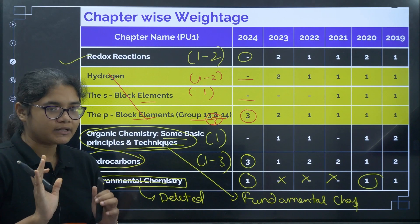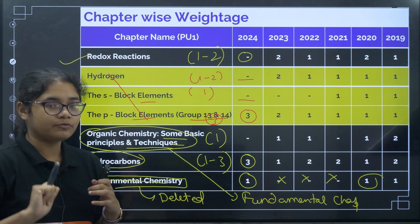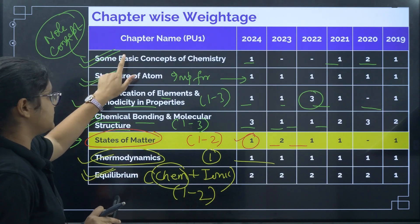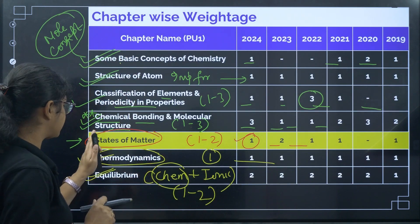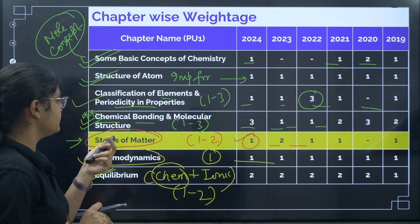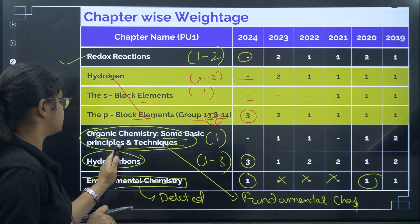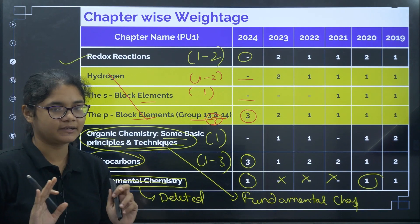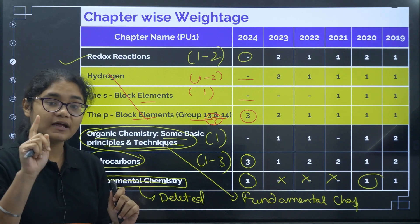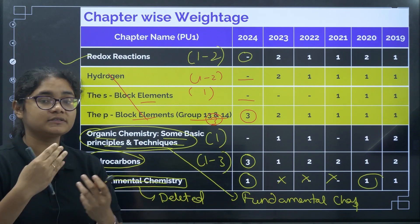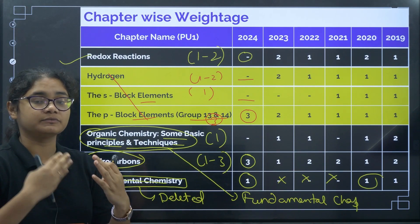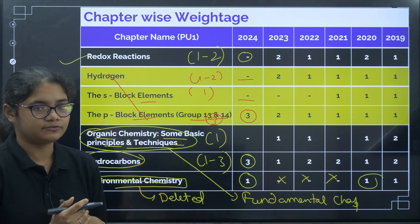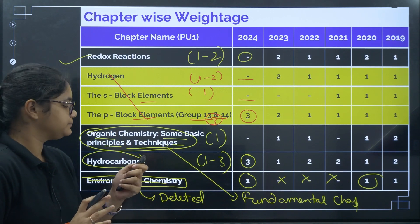Now we are done with PU1. The conclusion — what chapters you have to focus on: Some Basic Concepts of Chemistry, Chemical Bonding, and Organic Chemistry: Some Basic Principles and Techniques. These are topics you should not leave behind, because they will help you understand the rest of chemistry. These are must-do topics.